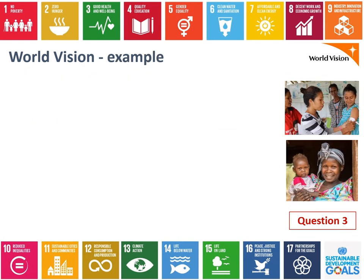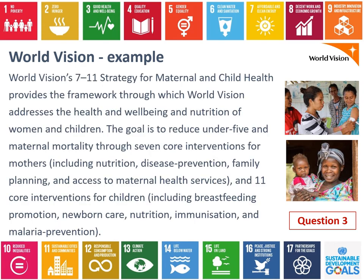An example of a programme that World Vision runs is the 7-11 Strategy, which is a maternal and child health programme. Their goal is to reduce under-five maternal mortality through seven interventions that focus on mothers and eleven that focus on children. These include things like improving nutrition, preventing disease, improving access to family planning — being able to choose how many children you have and spacing those children out — and access to maternal health services during pregnancy and childbirth. Children's programmes include promoting breastfeeding, helping mothers care for newborns, nutrition programmes, immunisation, and malaria prevention.